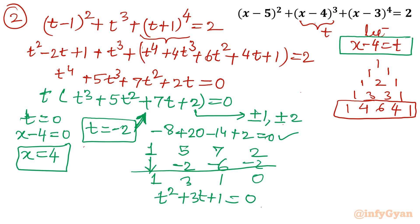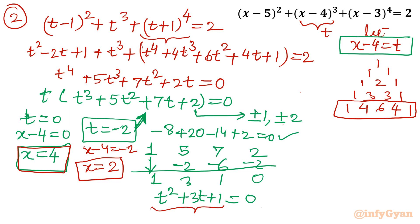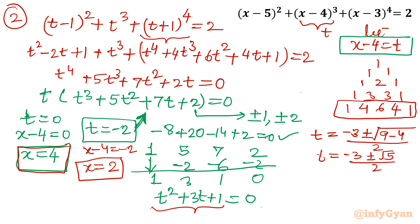For t = -2: x-4 = -2, so x = 2. And solving t² + 3t + 1 = 0 using the quadratic formula: t = (-3 ± √(9-4))/2 = (-3 ± √5)/2. Substituting back, x = 4 + (-3 ± √5)/2 = (5 ± √5)/2. Same results as Method 1.